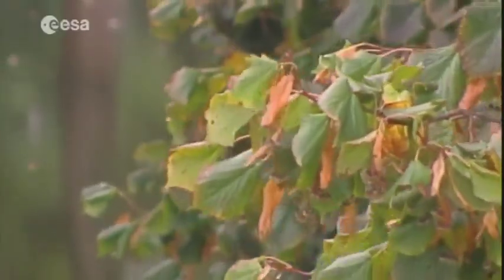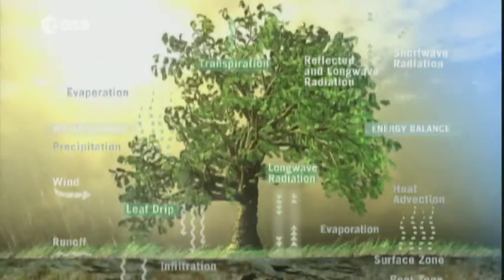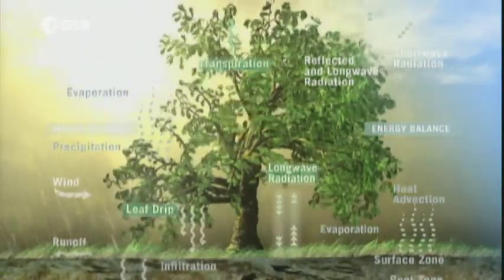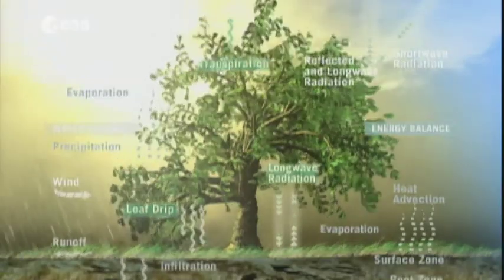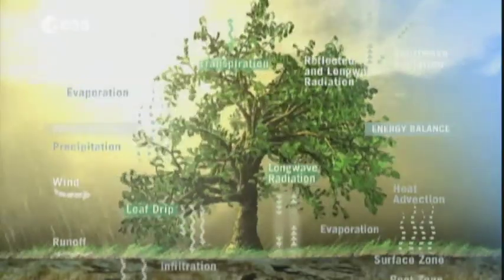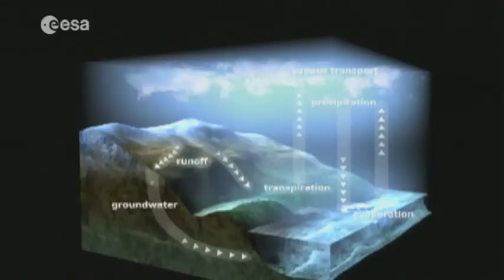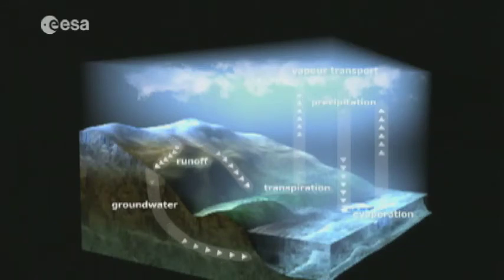Soil moisture and its evaporation play an important role in weather and climate. It's part of a well-known cycle, with rain, snow or hail landing on the ground creating water or humidity, then evaporation, followed by a cooling at altitude which brings further precipitation.